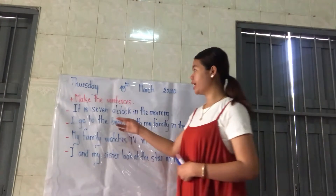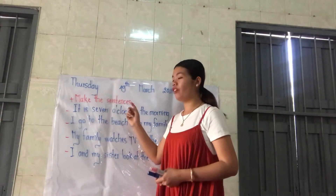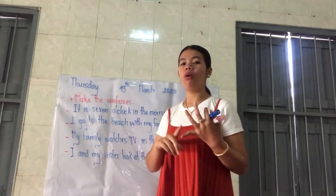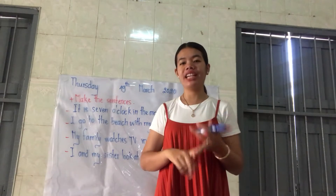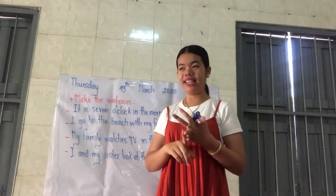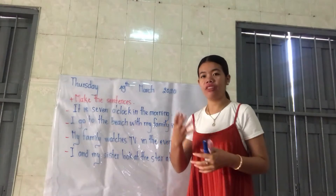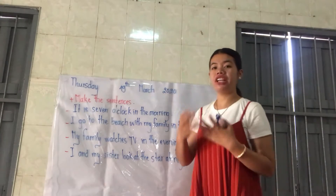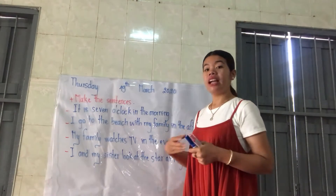Okay, so now here my sentence. Make the sentences with the four words. What words are they? Morning, afternoon, evening, and night. I will read my sentence for you, and you can make it by yourself. I will check it.